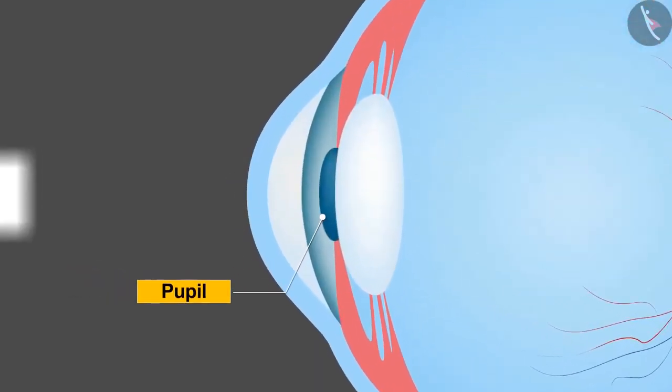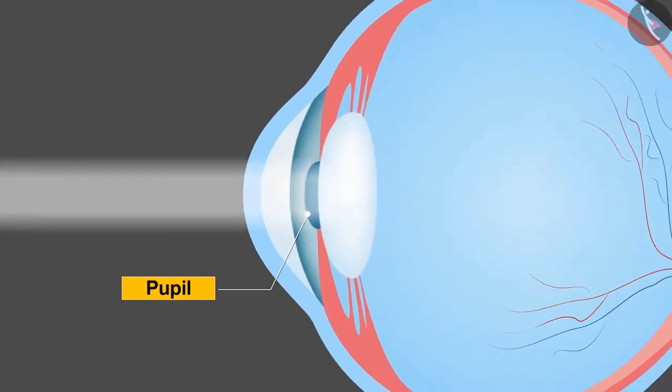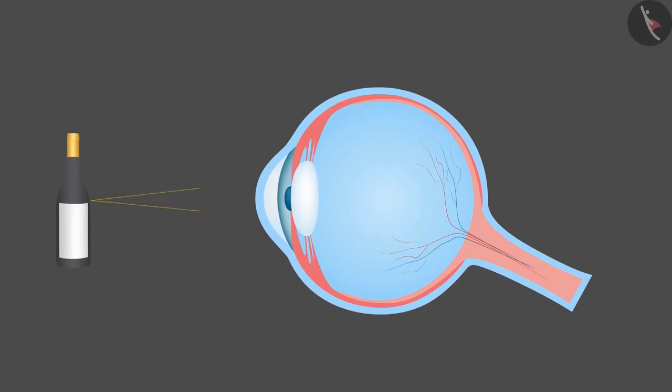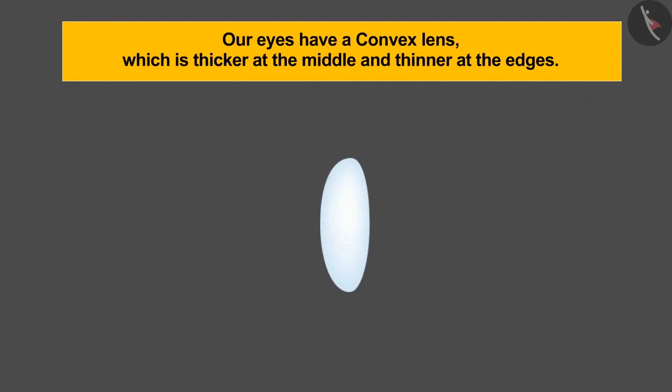The light passes through the lens after it enters through the pupil and creates an image on a surface located at the back side of the eye. Our eyes have convex lens which is thicker at the middle and thinner at the edges.